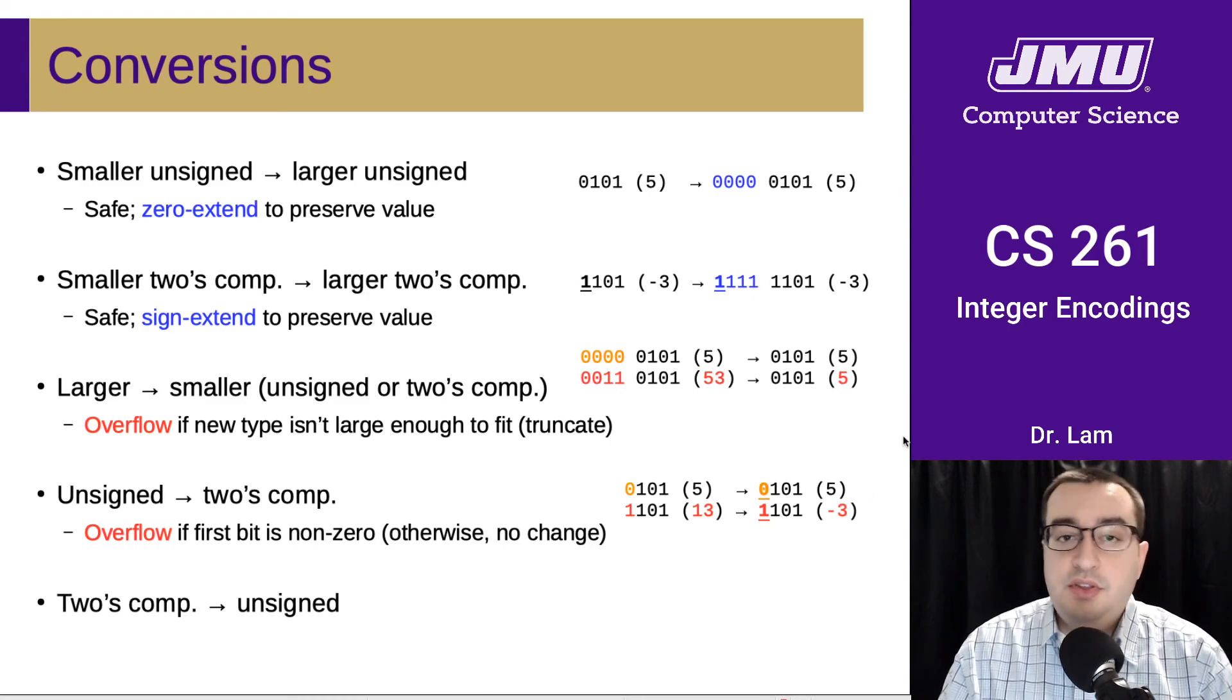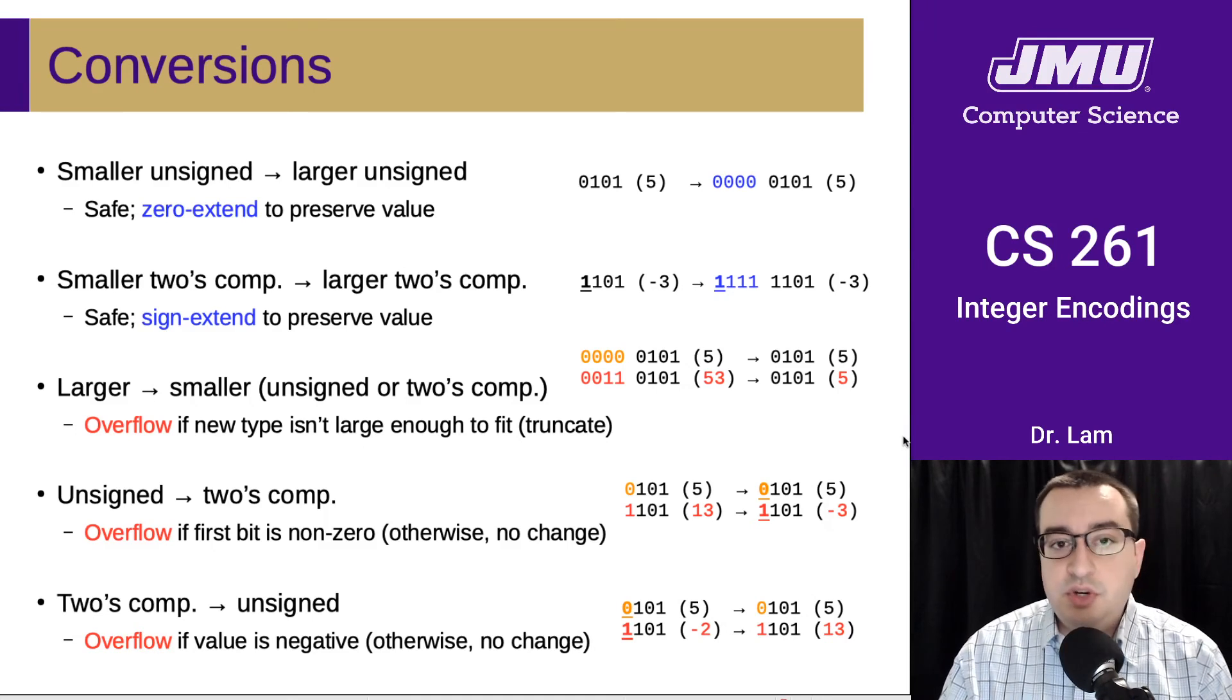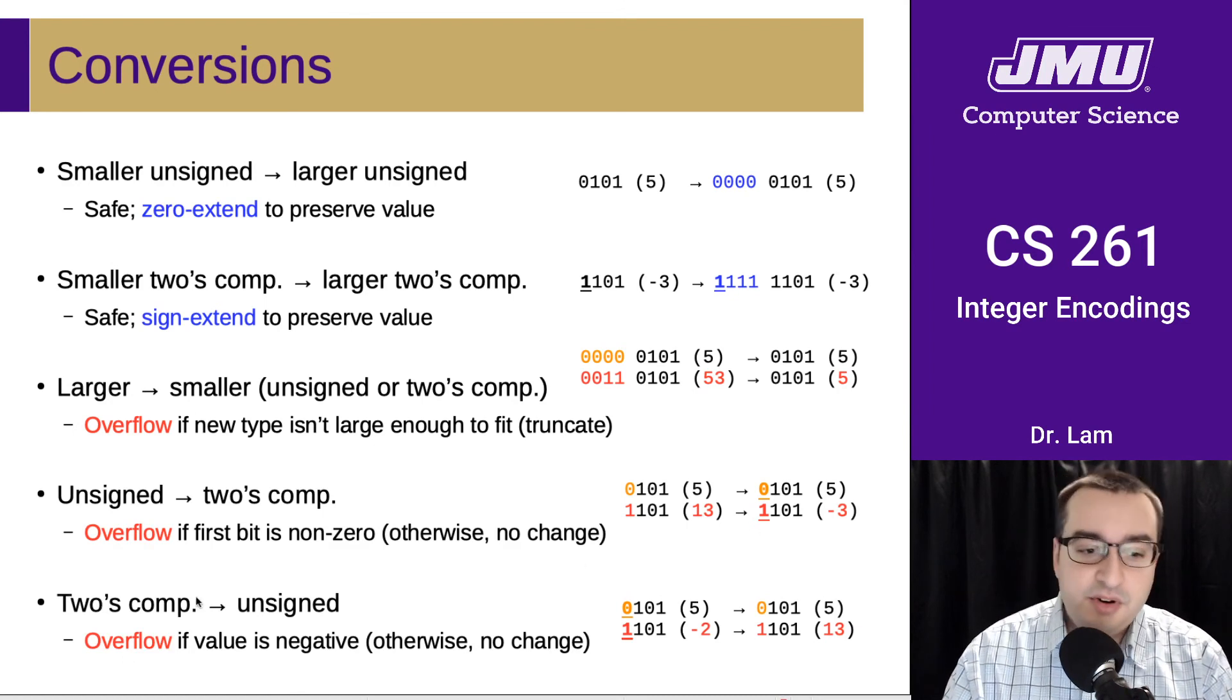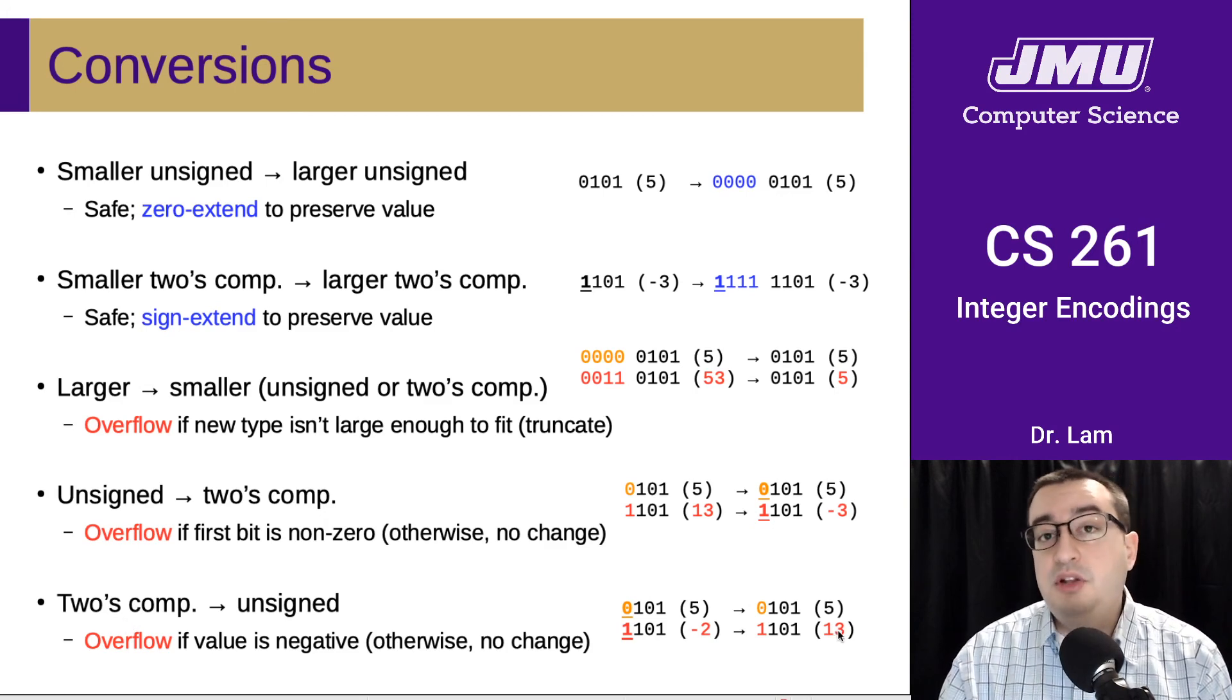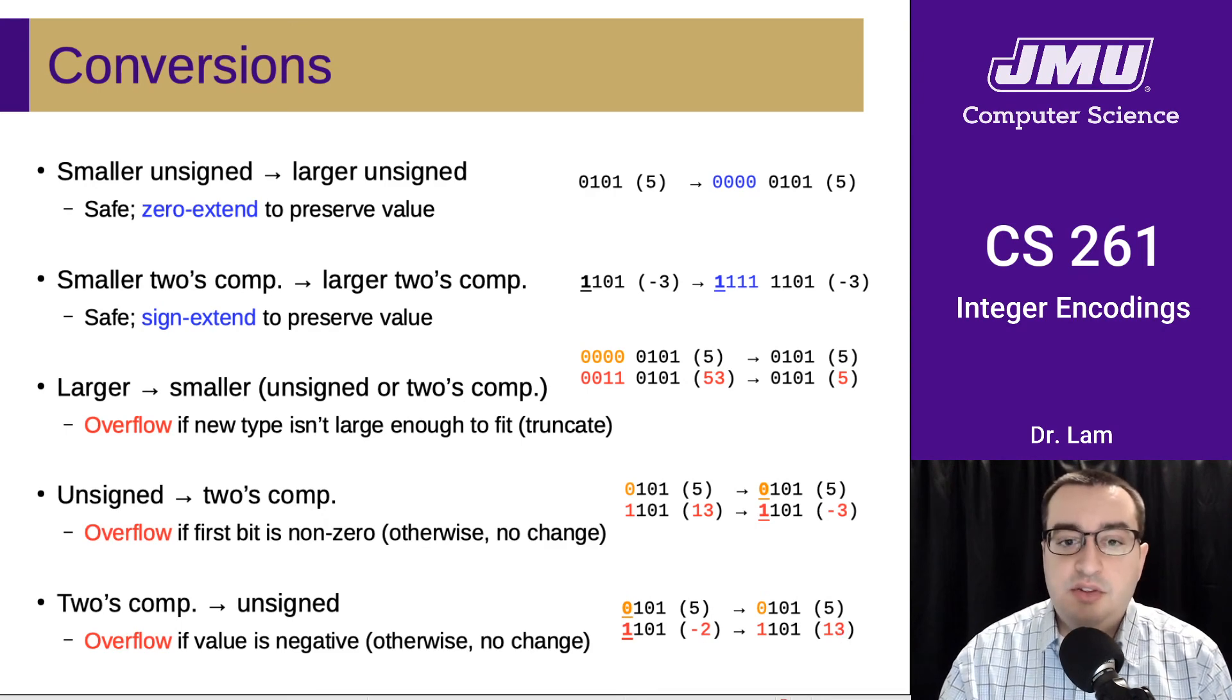And then hopefully this leads to the correct conclusion, which is that you can also get overflow going the other direction. This one's perhaps a little bit easier to understand. Two's complement can store negative numbers, unsigned can't. So if you have a negative number represented in two's complement, it's simply going to become a large positive number in unsigned representation. And so you cannot always do that conversion safely.